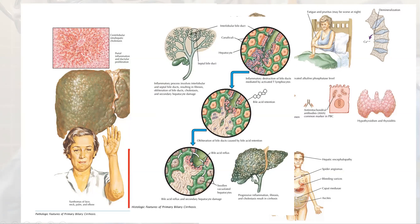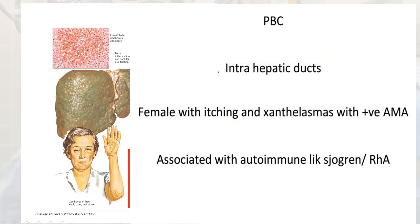So it is intrahepatic only, leading to extravasation of bile into the liver causing liver cirrhosis. Simply: primary biliary cirrhosis — intrahepatic ducts are affected, it is autoimmune, the patient is female in her 40s to 60s, with itching, xanthelasma, positive antimitochondrial antibody, and associated with autoimmune diseases like Sjögren's, rheumatoid arthritis, and hypothyroidism.